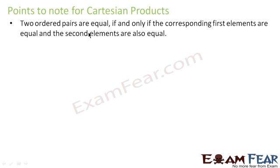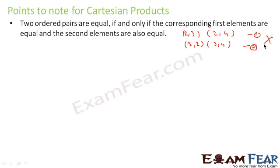Two ordered pairs are equal if and only if the corresponding first elements are equal and the second elements are equal. For example, the set {(2,3), (2,4)} is not equal to {(3,2), (3,4)} because the first element must match the first element and the second element must match the second element. In a normal set the order doesn't matter, but in an ordered Cartesian product the order does matter.